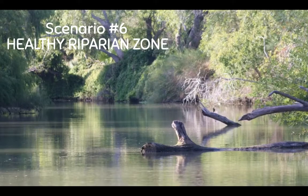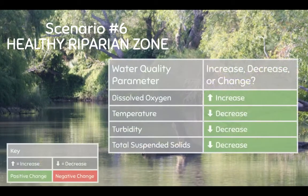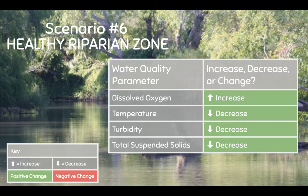The riparian zone refers to the area around a river in which the plants are directly affecting and being affected by the river. Thanks to the trees casting shade over the river, the temperature decreases, which helps to increase dissolved oxygen. The roots from the trees also help to stabilize the riverbank and keep soil out of the water, reducing turbidity and total suspended solids. A healthy riparian zone can act as a buffer between the water and nearby influences, filtering pollutants before they reach the river, and protecting it from many of the negative effects we just talked about.